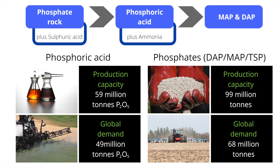The starting point for all phosphates is phosphate rock. It is a mine product that is typically reacted with an acid to free up the phosphate. The lowest analysis commodity phosphate product is SSP, or single superphosphate, which has a phosphate content of around 19% P2O5. Phosphate content is typically measured in P2O5, which is the chemical analysis for the phosphate molecule.